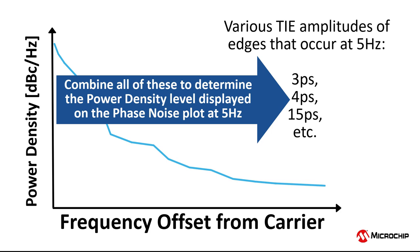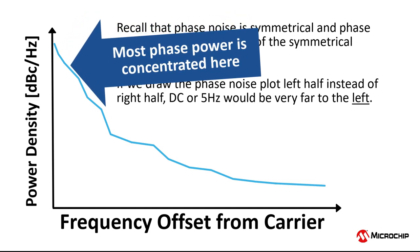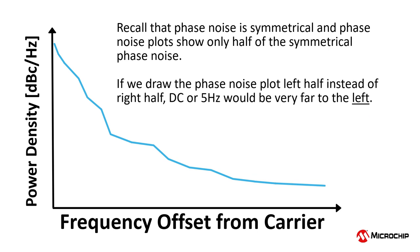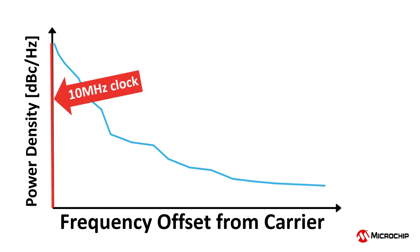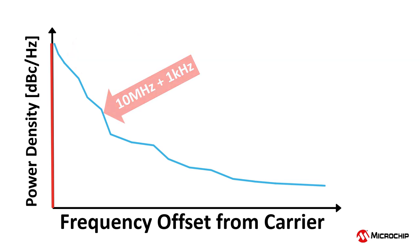Actually, 5 hertz is not a realistic number for us to be considering when discussing phase noise plots, because most of the phase power is concentrated near the carrier, not near DC, such as 1 hertz or 5 hertz. In my example with a 10 megahertz carrier, noise power would be concentrated much more in the frequencies near 10 megahertz, such as 10 megahertz plus 5 hertz, or 10 megahertz plus 1 kilohertz, and so forth. In other words, most phase noise will be at offsets closer to 10 megahertz as opposed to close to DC, which of course is 0 hertz.